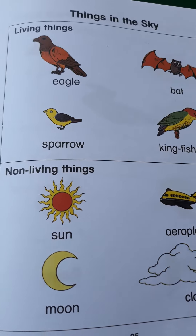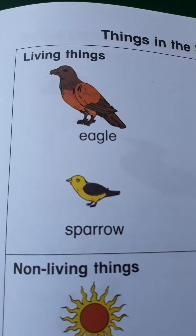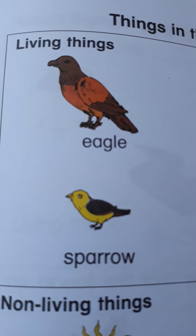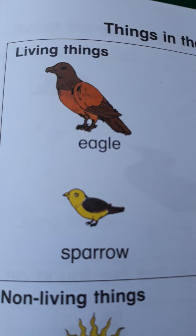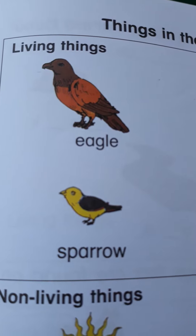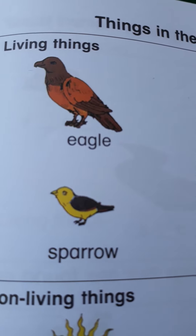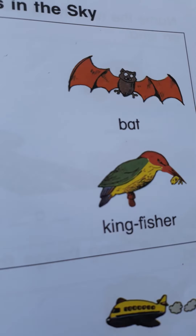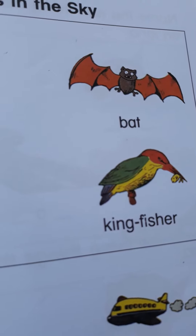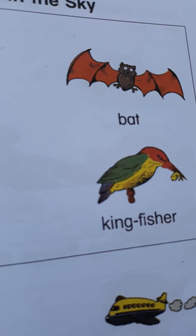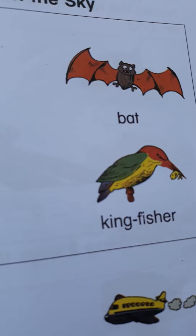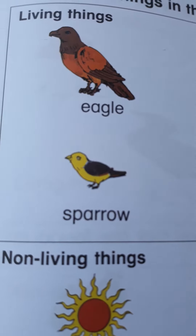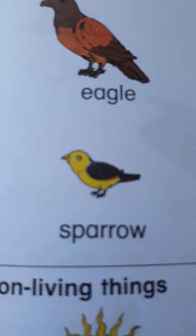For example, eagle — eagle can fly in the sky. Yes, eagle flies in the sky, it is a living thing. And bat — look at bat wings, how beautiful wings are they! It flies, which means it is also a living thing in the sky.